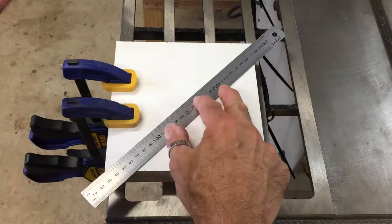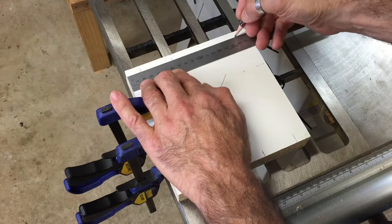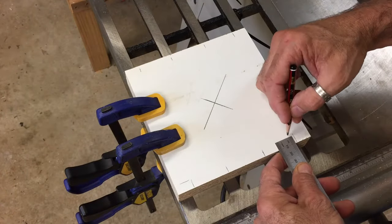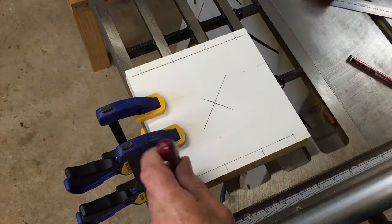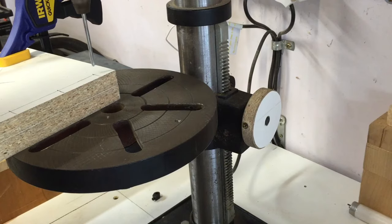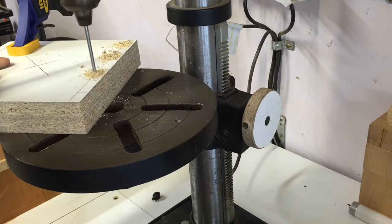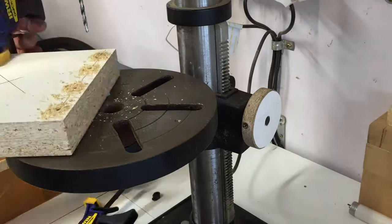Then I just found the center of that piece by crossing the diagonals, marked up some holes for fixing screws to screw the two pieces together. Punched them, drilled them out on the table, on the bench drill.